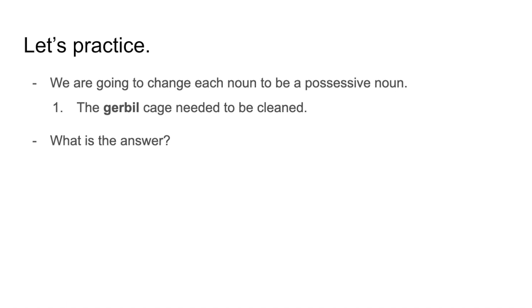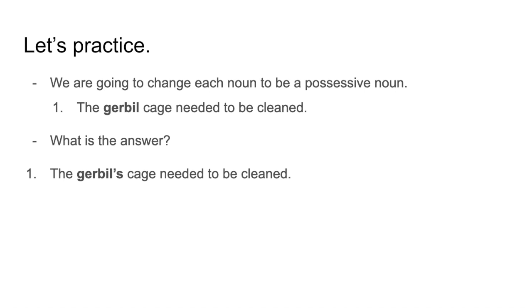Let's practice. We are going to change each noun to be a possessive noun. The sentence is: the gerbil cage needed to be cleaned. Remember good old apostrophe S — all we're going to do is add apostrophe S onto the end of our noun, which is bolded. So it becomes: the gerbil's cage needed to be cleaned.